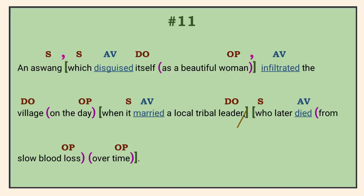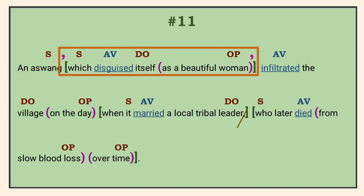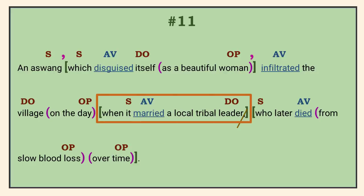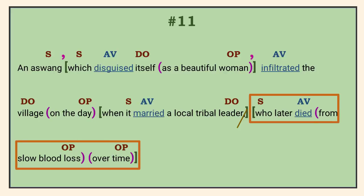Number 11. The independent clause is 'an aswang infiltrated the village on the day.' All the words that modify the complete subject and predicate are part of that clause, so technically the independent clause includes all three dependent clauses here. 'Which disguised itself as a beautiful woman' provides non-essential information about the aswang; we know that if the writer intended this clause to be restrictive, they would have used 'that' as the relative pronoun instead of 'which' — therefore we enclose the clause in commas. Starting with the relative adverb 'when,' the second dependent clause describes this specific day and modifies the noun in front of it, which happens to be the object of a preposition. The third dependent clause specifies which local leader died, so we need to remove the comma.